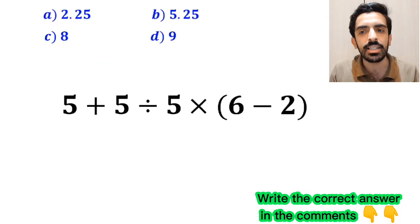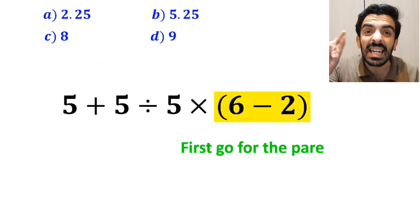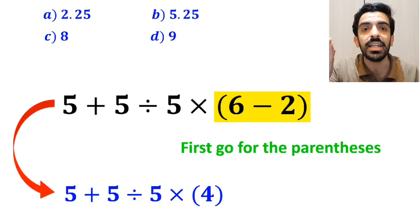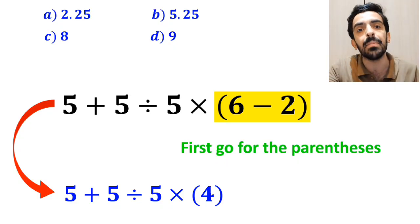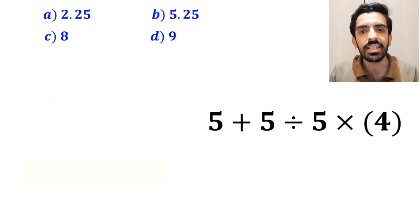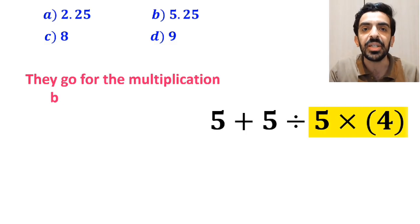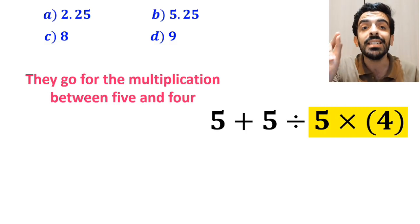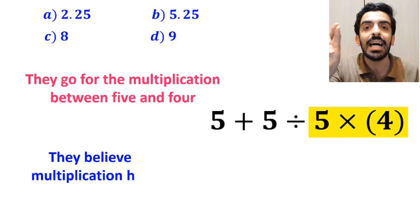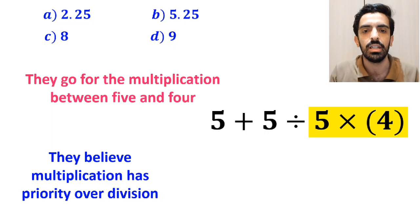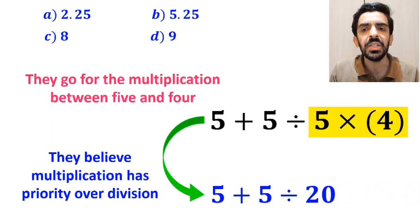Also, some other people when solving this question first go for the parenthesis and write this expression as 5 plus 5 divided by 5 then times 4. And the next step they go for the multiplication between 5 and 4 because they believe multiplication has priority over division. So, this expression simplifies to 5 plus 5 divided by 20.